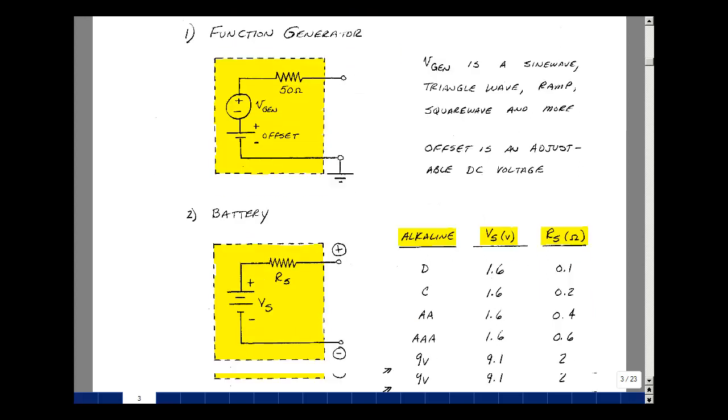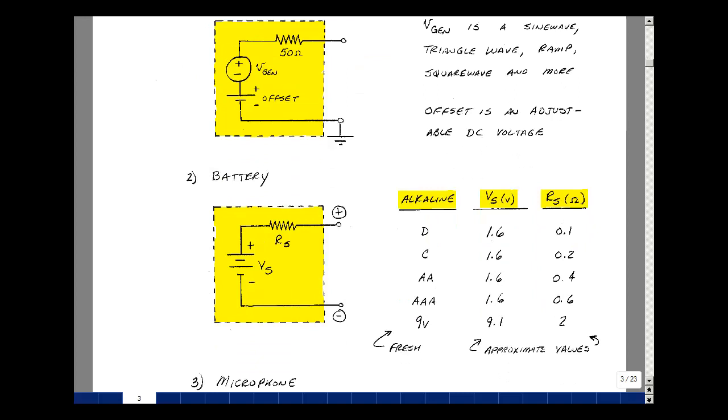Now we're all familiar with batteries, and they too have a Thevenin equivalent circuit. So for a 1.5-volt battery, we have a voltage, but that's typically a little bit bigger than 1.5 when it's fully charged. There's also a Thevenin resistance. And for a D cell, that would be about 100 milliohms. For a C cell, about 200 milliohms. For an A cell, about 400 milliohms. For a AAA cell, about 600 milliohms. And for a 9-volt battery, around 2 ohms. We're going to measure the Thevenin resistance of a D cell battery.